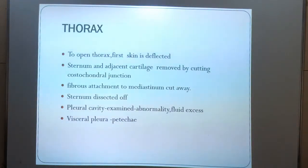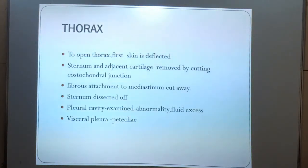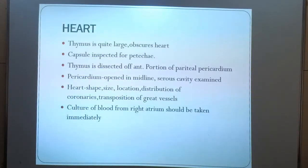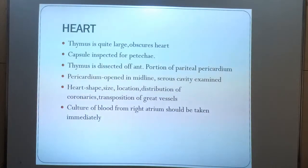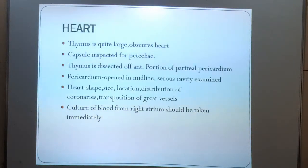In the internal examination, to open the thorax, the skin is first deflected, the sternum is dissected off, and the pleural cavity is examined for abnormality and excess fluid. The visceral pleura is examined for petechiae. In the heart, the thymus is large and obscures the heart, so it is dissected. A portion of parietal pericardium is noted, and the pericardium is opened in the midline. The shape, size, location, distribution of coronaries and the great vessels are seen. A culture of blood from the right atrium should be taken immediately.